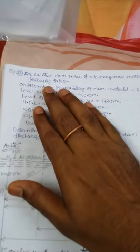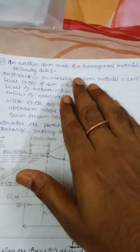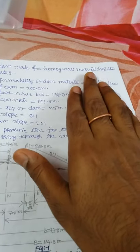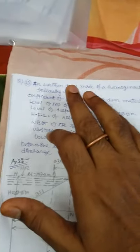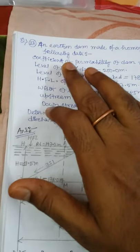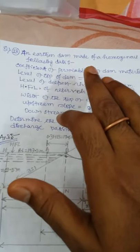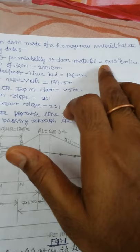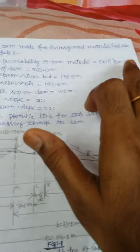Now mathematics, Arden dam. An Arden dam made of a homogeneous material has the following data: coefficient of permeability of dam material is equal to 5 into 10 to the minus 4 cm per second.